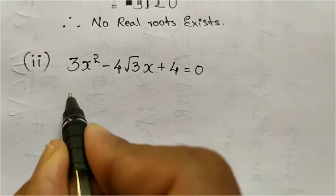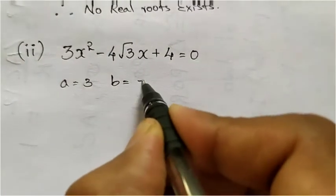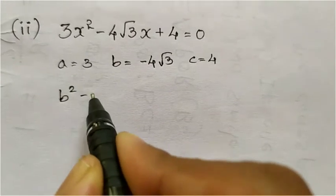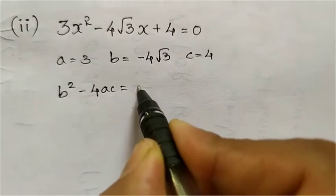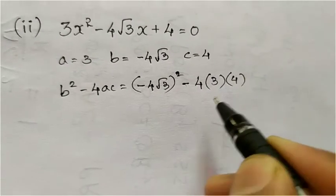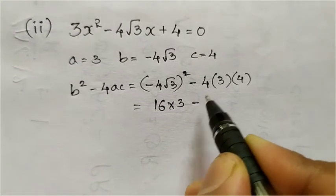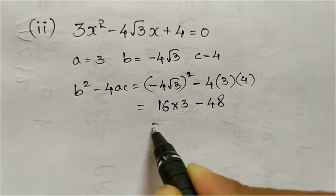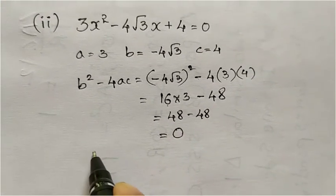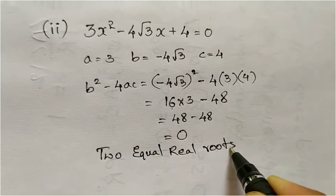Going to the second one: 3x square minus 4 root 3 times x plus 4. Let us take a equal to 3, b equal to minus 4 root 3, c equal to 4. The discriminant is b square minus 4ac. b square means minus 4 root 3 whole square, minus 4 times a times c, that is 3 times 4. Minus 4 root 3 whole squared is 16 times 3, which is 48; minus 4 times 3 times 4 is also 48. So 48 minus 48 gives 0. We will get 2 equal real roots because the discriminant is equal to 0.